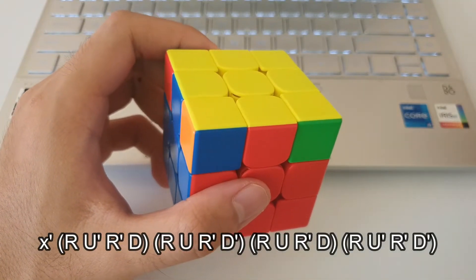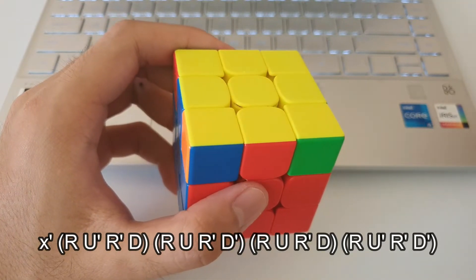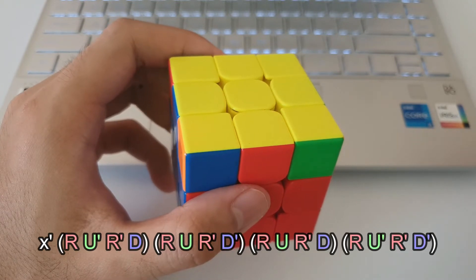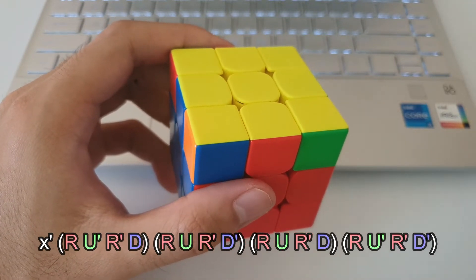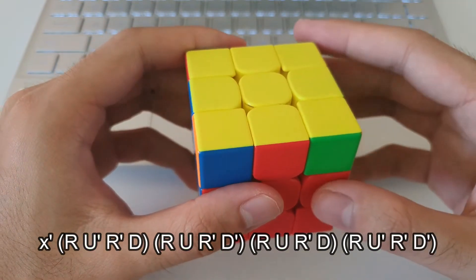Alright, so the E-perm algorithm is a fairly long 16 move RUD algorithm. The RUD moves may seem random at first, but if you look closely there is a nice pattern to it. So I'll be going over some nice ways to memorize this algorithm. So once again,